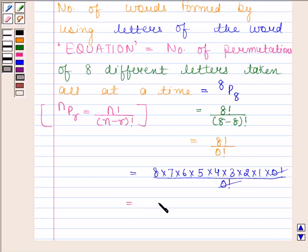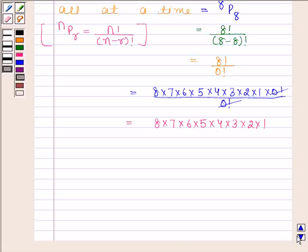So, we are left with 8 into 7 into 6 into 5 into 4 into 3 into 2 into 1. And on simplifying it, we get 40,320.